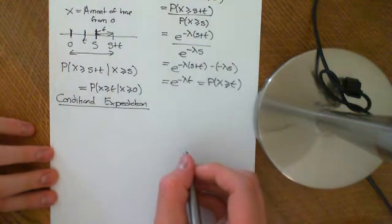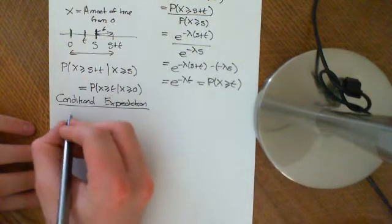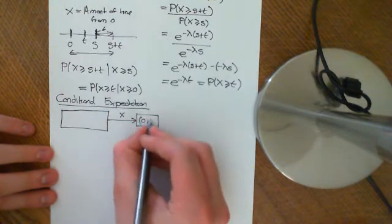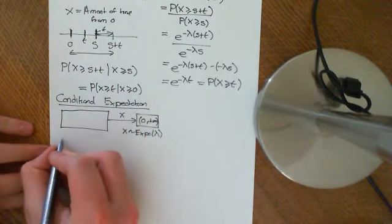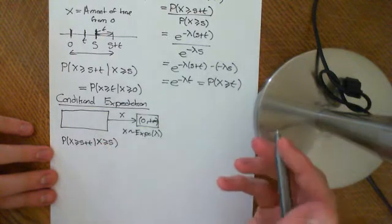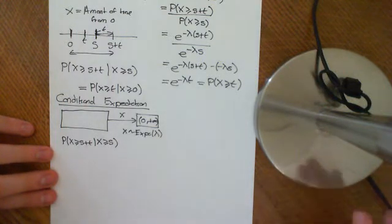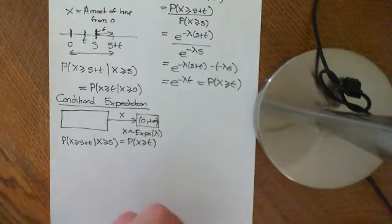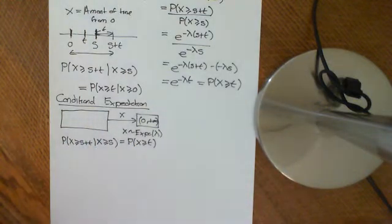In the previous video, what we saw is that the conditional probability — if we have some abstract probability space and a random variable mapping it onto the positive real numbers, and x is exponentially distributed with parameter lambda — then we saw that the probability that x is greater than or equal to s plus t, given that x is greater than or equal to s, is exactly the same as if you were at time zero asking how likely it is that you'll have to wait t minutes for your phone call.